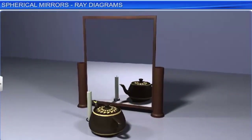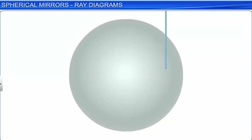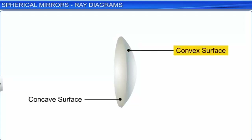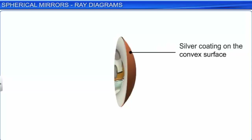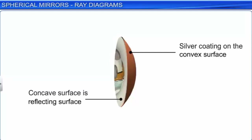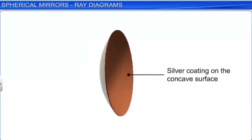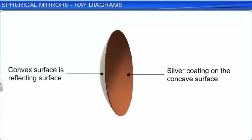Mirrors are not always flat. If we make a hollow glass sphere and cut a small portion out of it, the inner hollow surface is called the concave surface and the outer bulging surface is called the convex surface. If the convex side is given a silver coating and the smooth concave surface acts as a reflecting surface, the mirror is called a concave mirror. On the other hand, if the concave surface is coated in silver and the smooth convex surface acts as a reflecting surface, the mirror is called a convex mirror.